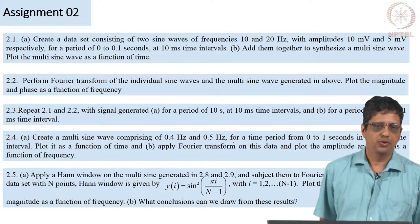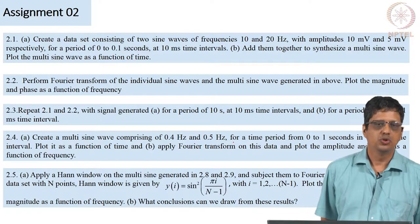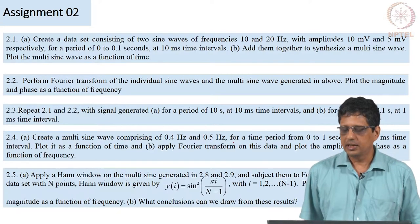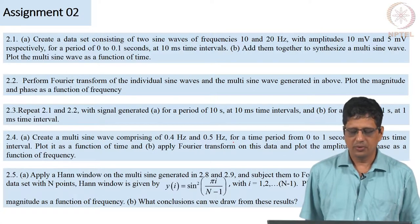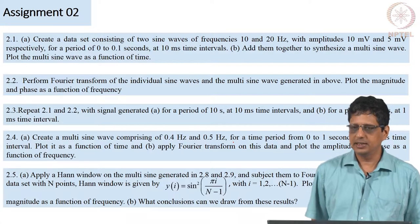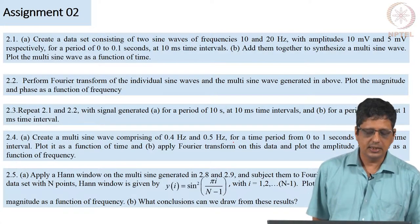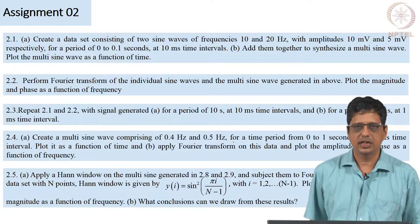If you do the Fourier transform correctly, you should be able to extract the magnitude. The transform data should tell you that at 10 hertz you have 10 millivolts and 20 hertz you have 5 millivolts in this time domain data. And in this case, we have not given any phase, so it should get a phase of 0.